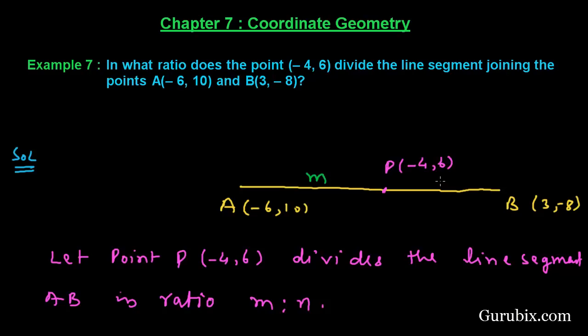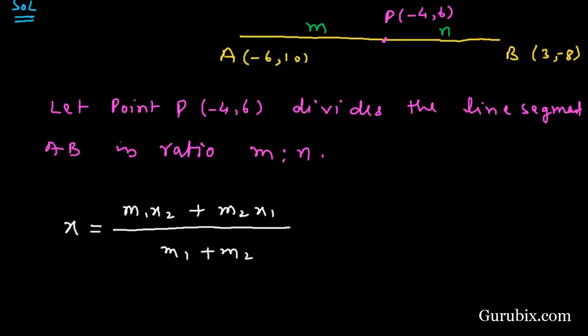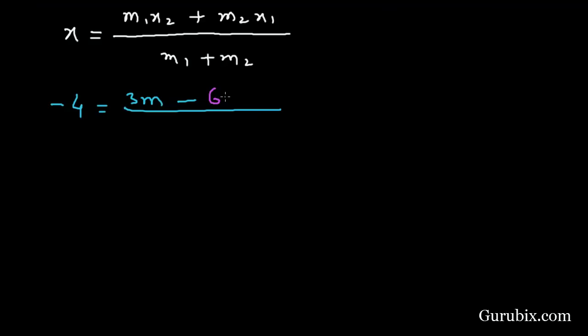And now we shall apply the section formula for x: x = (M₁X₂ + M₂X₁)/(M₁ + M₂). We are given x = -4. M₁ is M, X₂ is 3, then it will be 3M. M₂ is N, and it will be -6N. Here we have M + N.